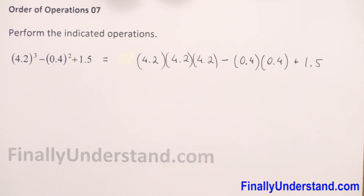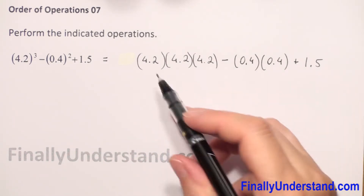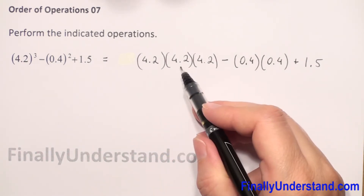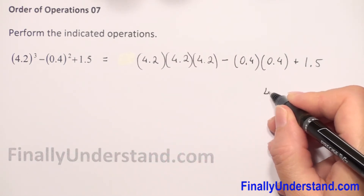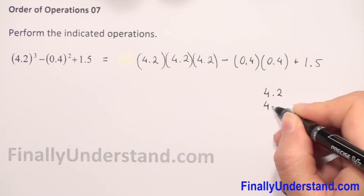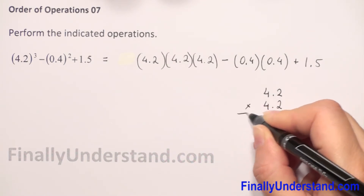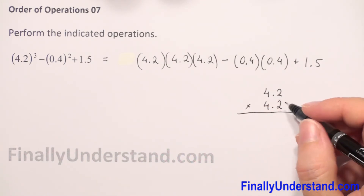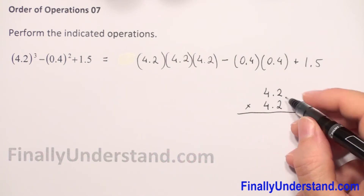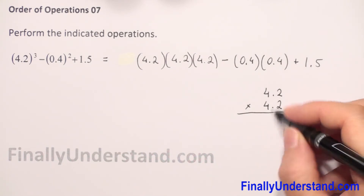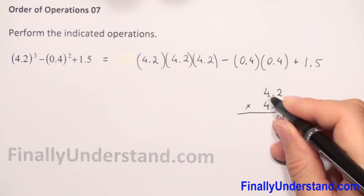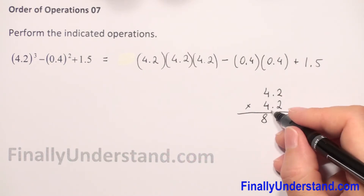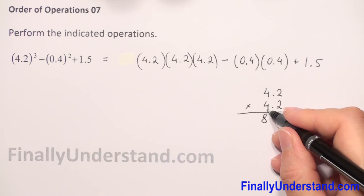First we do the multiplication 4.2 × 4.2, then multiply the result by 4.2. To multiply decimal numbers, we multiply like whole numbers and count decimal places at the end — so we forget about decimal points. We have 2 × 2 = 4, then 2 × 4 = 8. Now 4 is in the second column — the tenths column.